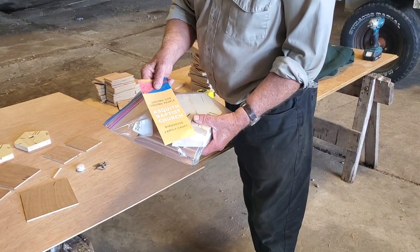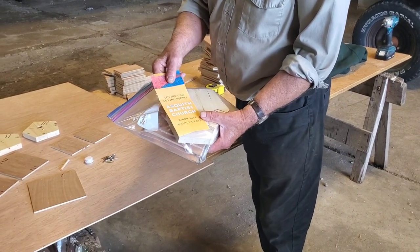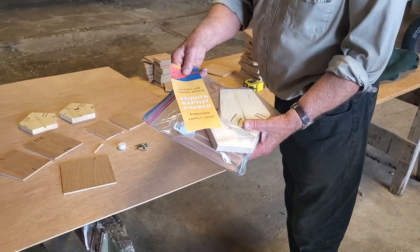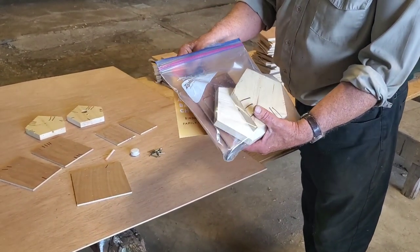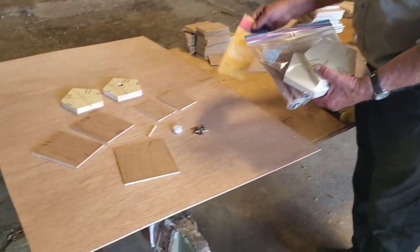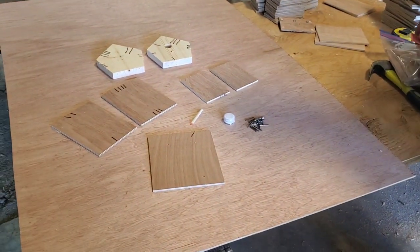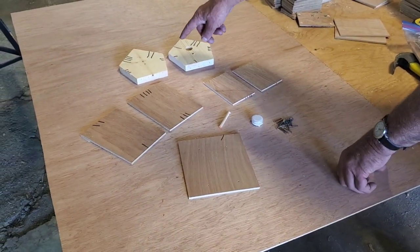This is the Ascot Baptist Church Birdhouse kit, and when you get your kit, you can open it up. The kit will look like this. You will open it up, and these are the components that you will have in it.